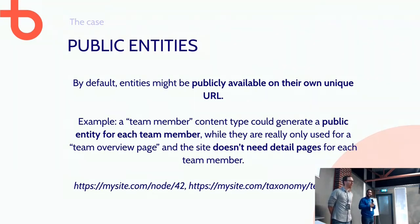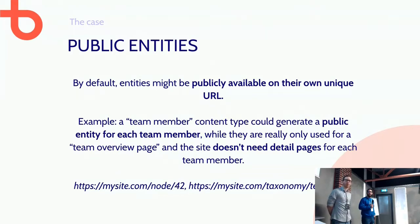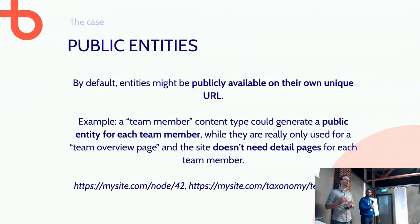By default, every entity might be available on its own public URL. So let's say you have a team member content type — every team member might be an entity available on their own separate node on the internet. Maybe you only use the team member content type to show an overview, but you don't have a detail page for everyone.